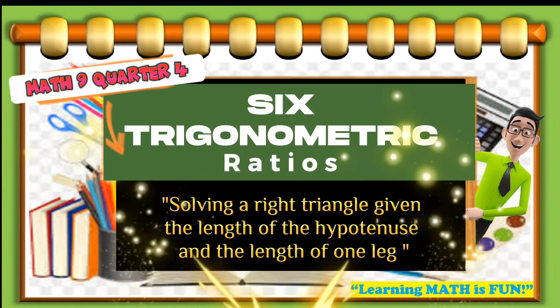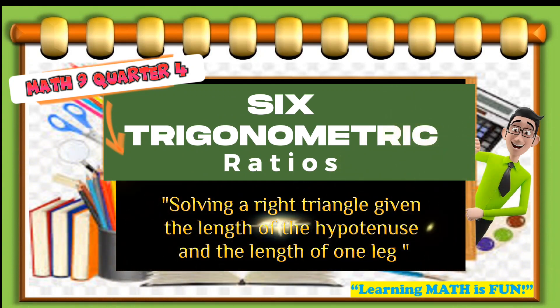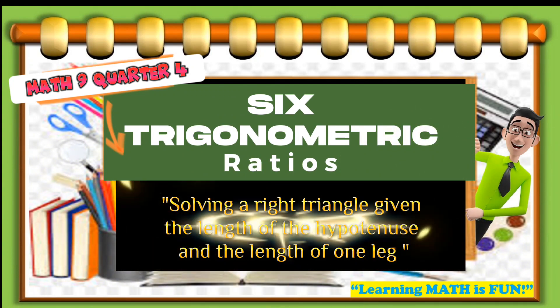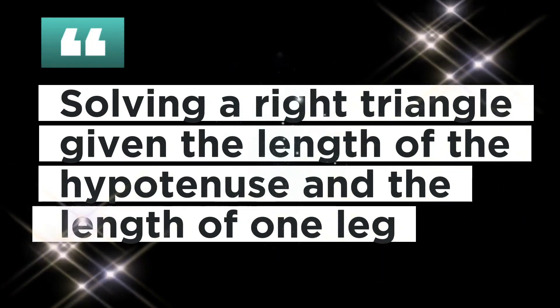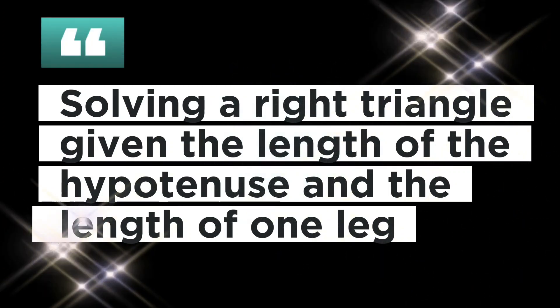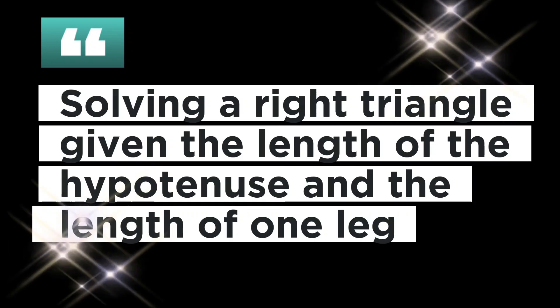Hello everyone! Today we're going to talk about the six trigonometric ratios — specifically solving a right triangle given the length of the hypotenuse and the length of one leg.